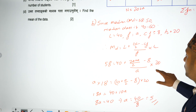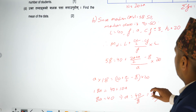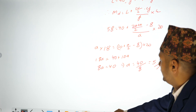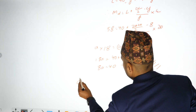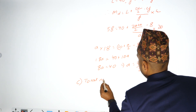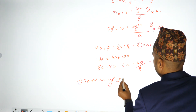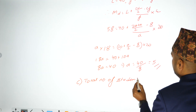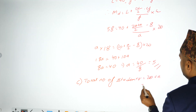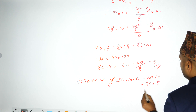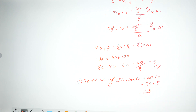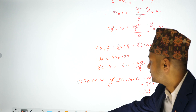So find the total number of students, which means 20 plus A. A value is 5, so total number of students is 20 plus A, which means 20 plus 5, which means 25. Total number of students is 25.